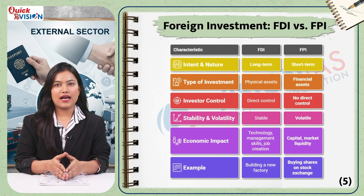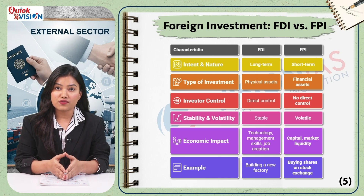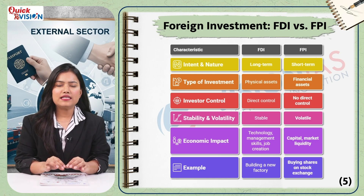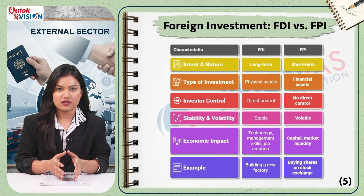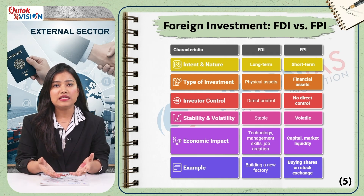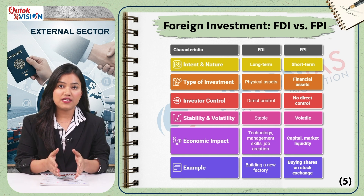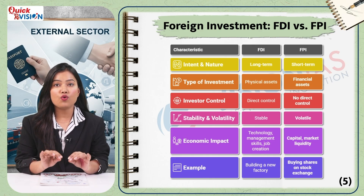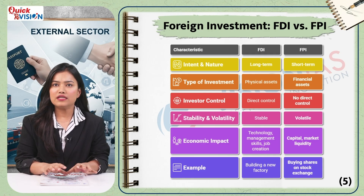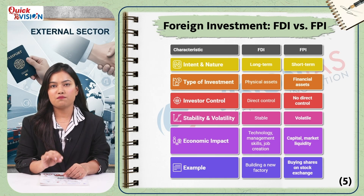Let's clearly understand the difference between FDI and FPI, as this is very important for the exam. FDI is a long-term investment where the investor has direct control over the company's management, such as a foreign company setting up a factory in India — it is more stable. In contrast, FPI is a short-term investment where the investor buys financial assets in the stock market and has no control over management. It is more volatile and can be pulled out easily, which is why it is sometimes called hot money.